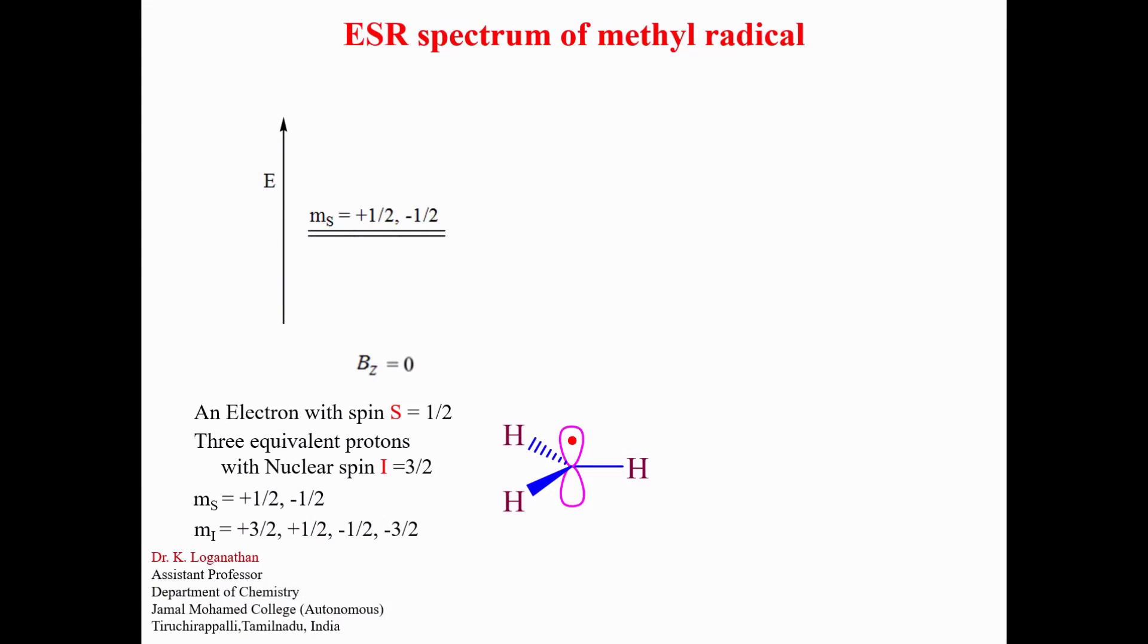Application of magnetic field removes the degeneracy between them. The MS equals minus one-half sublevel goes down and the MS plus one-half sublevel goes up.